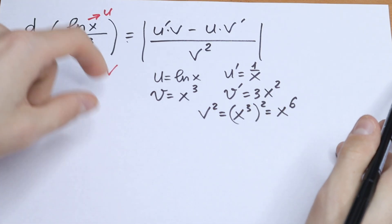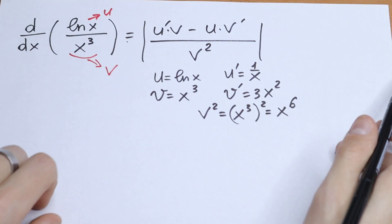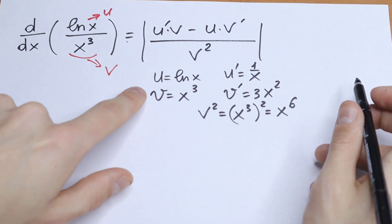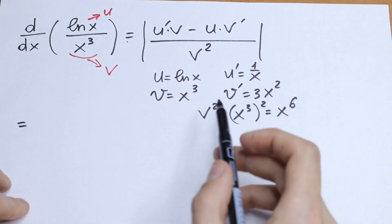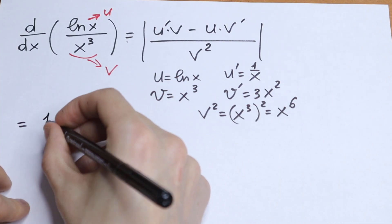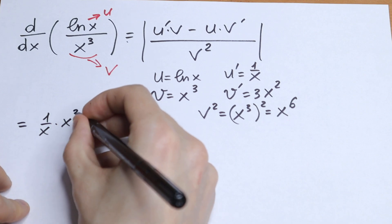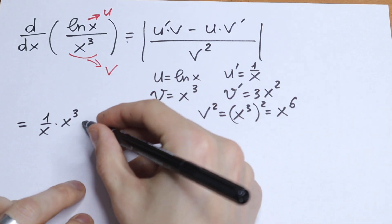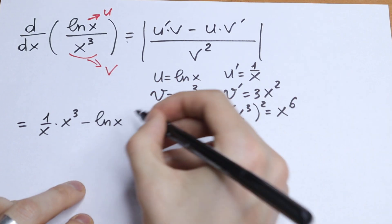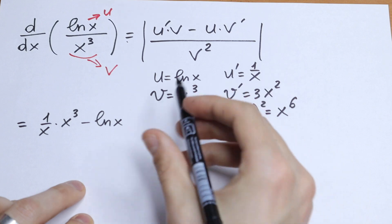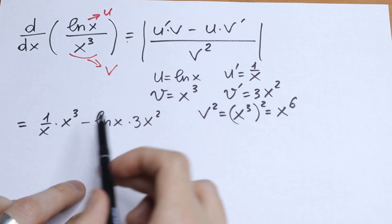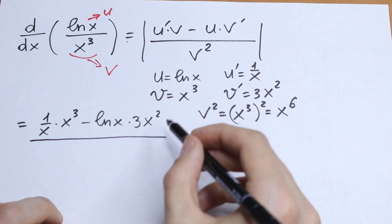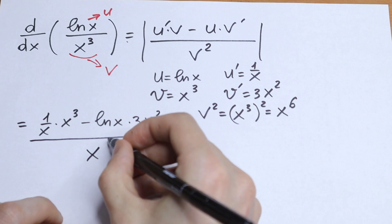So we have all of these components and we need to put them in our formula. That gives us: u' times v, which is 1 over x times x cubed — this is our first part — minus u times v', which is natural log x times 3x squared. All of this is divided by v squared, which is x to the sixth power.